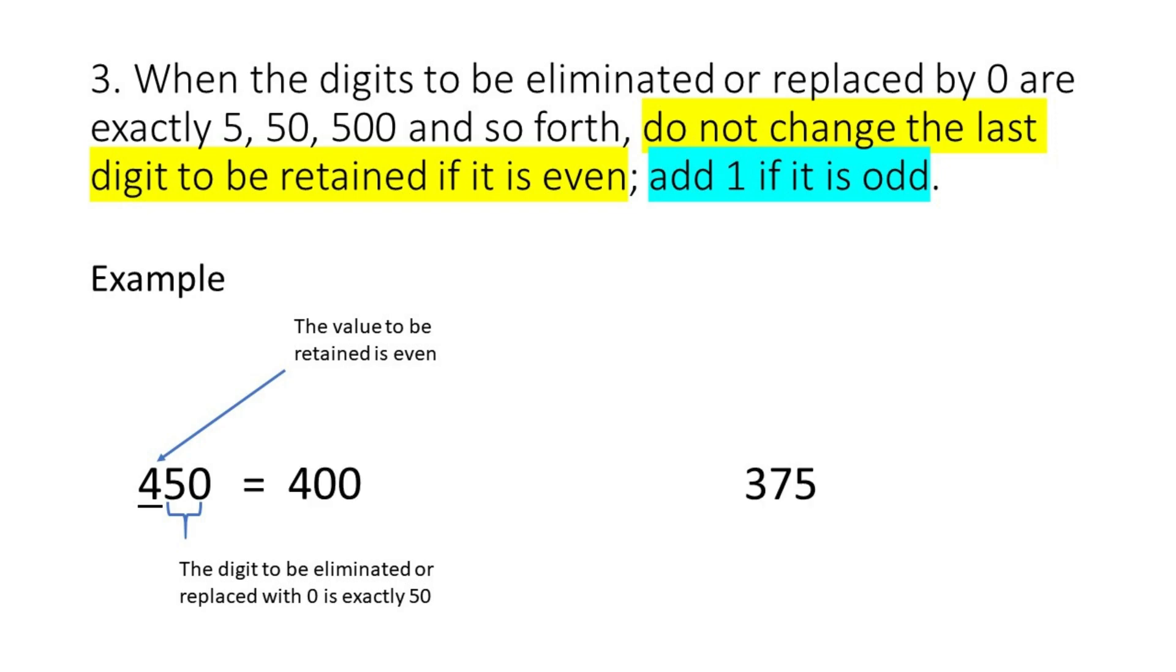On the other hand, if we round off 375 to the nearest tens, 7 is an odd number and the digit to be eliminated is exactly 5, hence 1 is added to 7, therefore our answer should be 380.